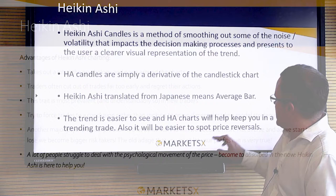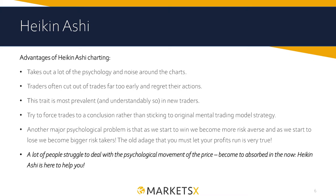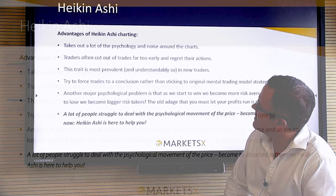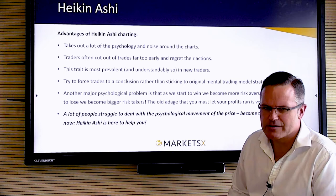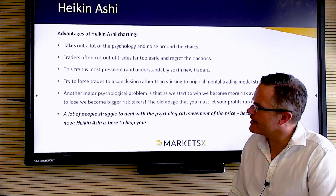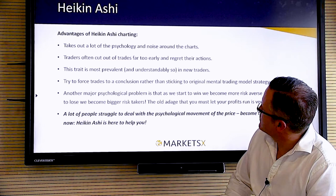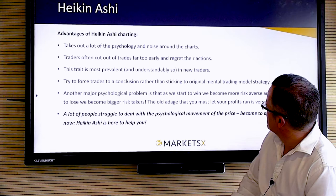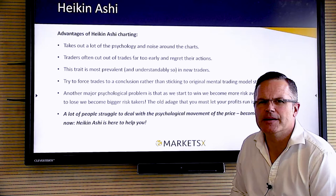I've put the maths in here if you're really interested, but first of all the advantages of Heiken Ashi charting: to summarize, it takes out a lot of the psychology and noise. When we cut out of trades too early we often get angry at ourselves — hopefully this method would stop that. We also try to force the trade to conclusion; this lets it run more naturally. When we start to win we become more risk averse, and as we start to lose we become bigger risk takers. This Heiken Ashi tool lets your profits run more easily, so we get a better risk return on our trades.